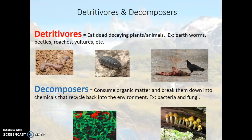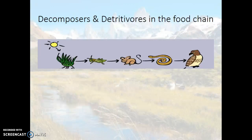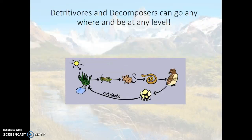Detritivores and decomposers are two organisms we've talked about before, but we haven't assigned them a trophic level. What level do you think they belong in? Decomposers is probably the more familiar word. Where would you put them? What would happen if producers died — where would decomposers go? Our detritivores and decomposers can go anywhere — they're at every level of the food web and the food pyramid.